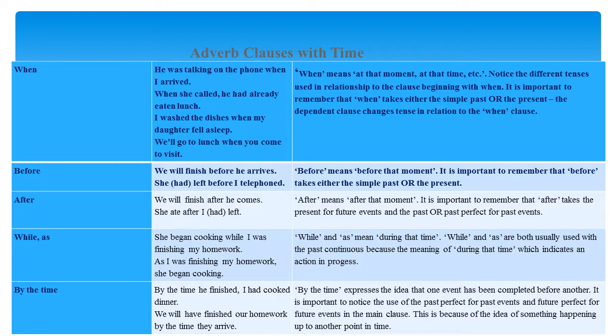Before: 'We will finish before he arrives.' 'She had left before I telephoned.' 'Before' means 'before that moment.' It is important to remember that 'before' takes either the simple past or the present. After: 'We will finish after he comes.' 'She ate after I had left.' 'After' means 'after that moment.' It is important to remember that 'after' takes the present for future events or the past or past perfect for past events. While / As: 'She began cooking while I was finishing my homework.' 'As I was finishing my homework, she began cooking.' While and as mean 'during the time.' They are usually used with the past continuous because the meaning of 'during the time' indicates an action in progress.